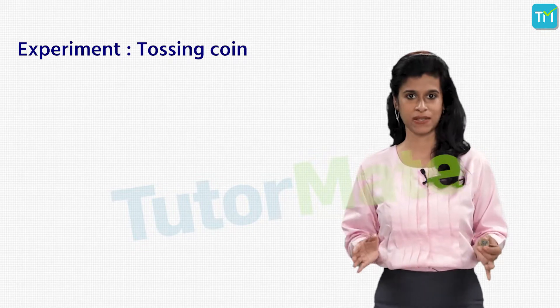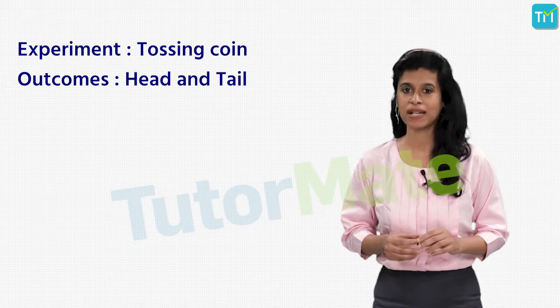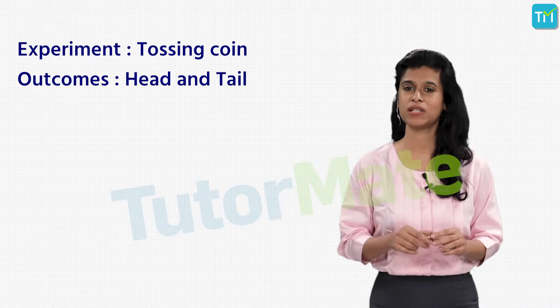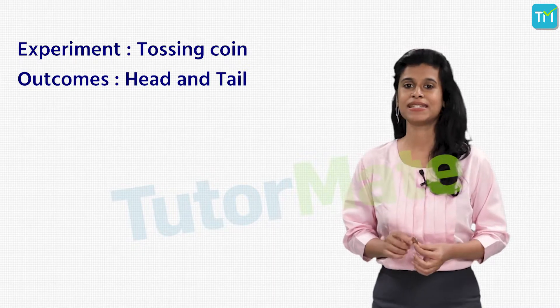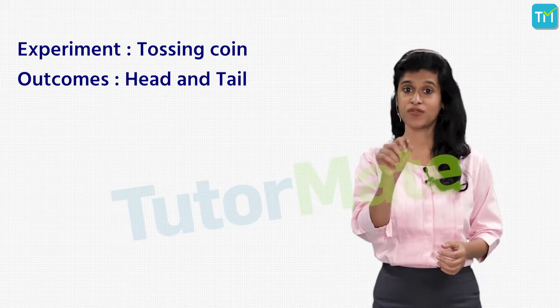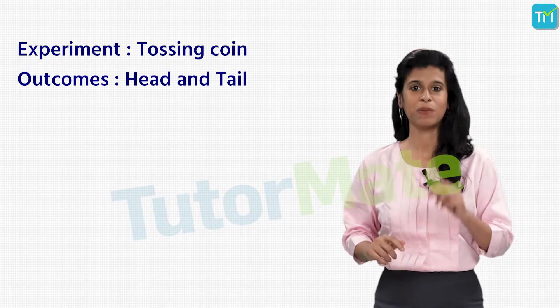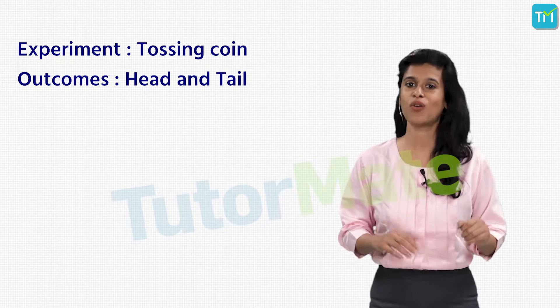And so, tossing of the coin in this case is the experiment, while the head and tail are two possible outcomes. But isn't there also a possibility that the coin might just fall in such a way that it stands on one of its edges and neither of the faces come up?